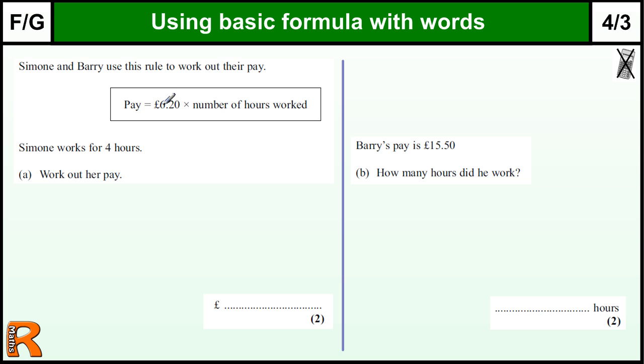So here we have the formula. Pay is £6.20 times the number of hours worked. So Simone works for four hours, work out her pay.